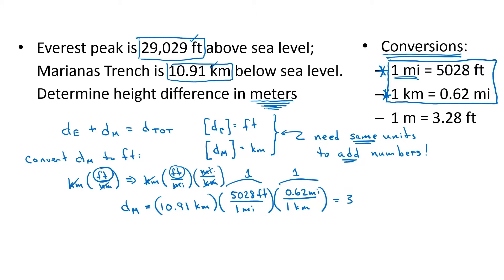So this comes out to be 34,010 feet. To get my total distance in feet now, D tot, that's the height of Everest, 29,029 feet, plus the depth of the Marianas Trench, which is 34,010 feet. So D total in feet is 63,039 feet.